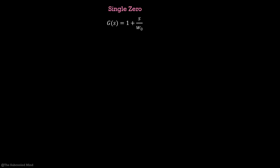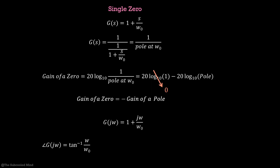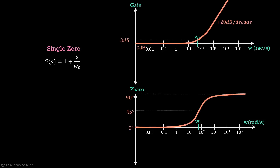Now let us look at a zero. Consider the transfer function (1 + s/ω₀). If we rewrite it as 1 divided by 1/(1 + s/ω₀), a zero is nothing but 1 over a pole. Division becomes subtraction in log scale, so the gain of a zero is exactly the negative of a pole in decibel scale. The phase also turns out to be the negative of the pole: the phase of a zero is arctan(ω/ω₀), which equals minus the phase of a pole. So a zero leads to an increase in gain at 20 dB per decade and the phase increases by +90 degrees — just the opposite of a pole.